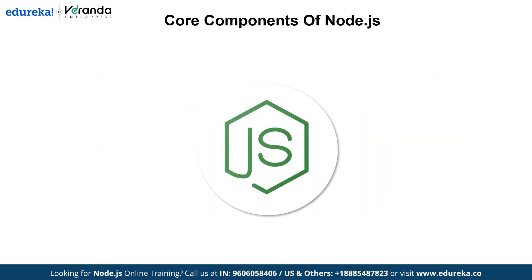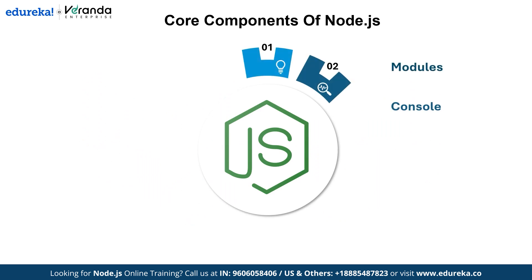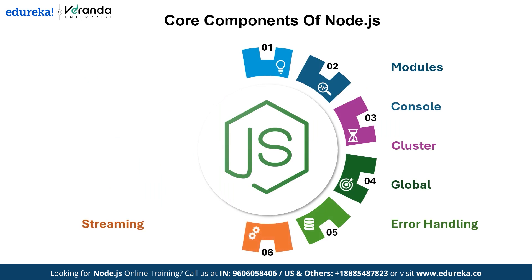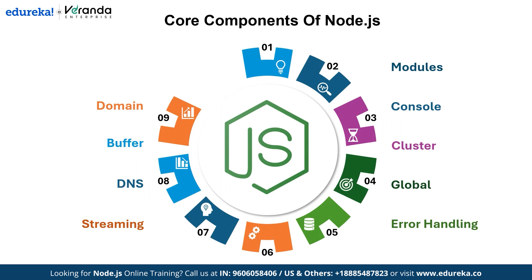Now let's take a quick look at the core components of Node.js. These include modules, console, cluster, global objects, error handling, streaming, DNS, buffer, domain, and debugger. Together these components make Node.js a robust runtime for building scalable applications.